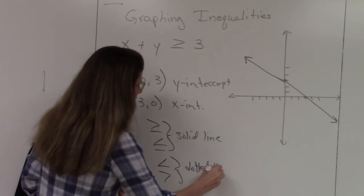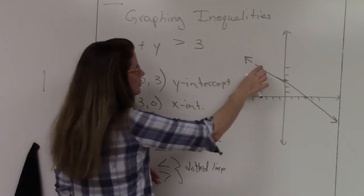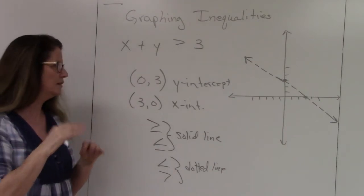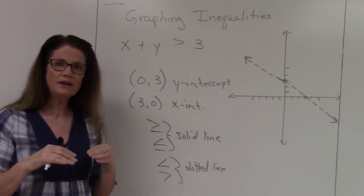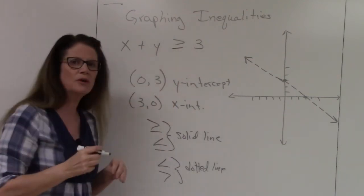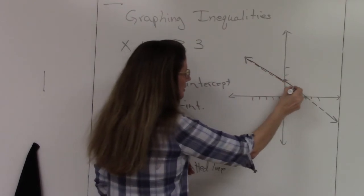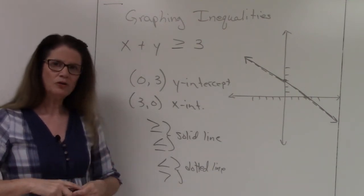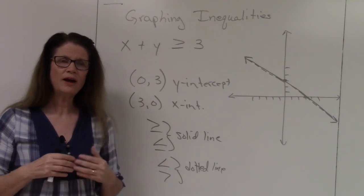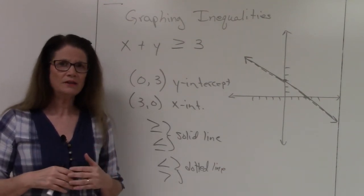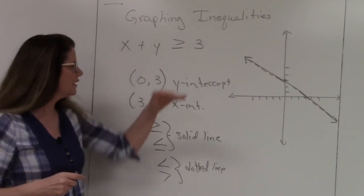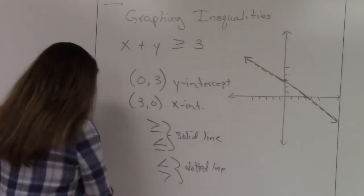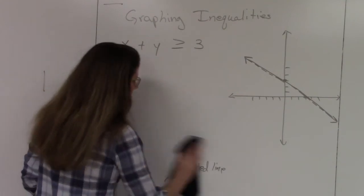If the inequality is just less than or greater than — without the equal to — then you draw a dotted or broken line, which indicates the points on that line are not included. So we're keeping this as greater than or equal to, giving us a solid line. When graphing an inequality, you also have to identify which side of the line is the solution — the points above or the points below.